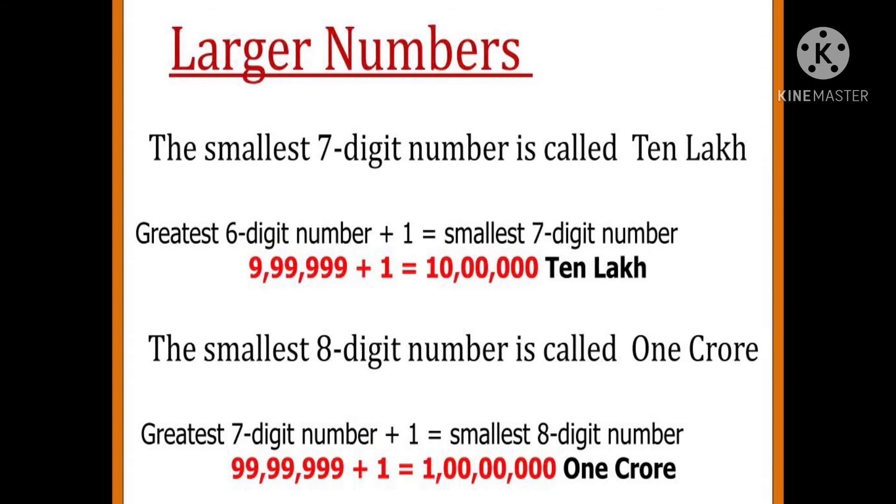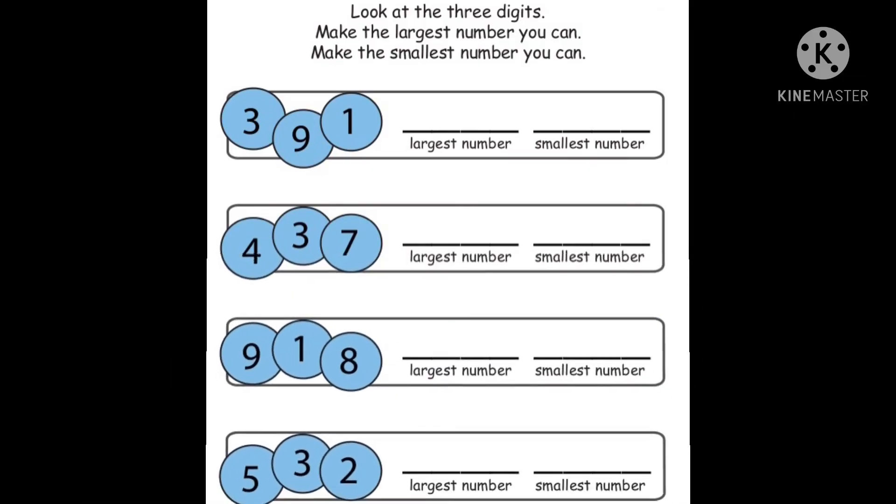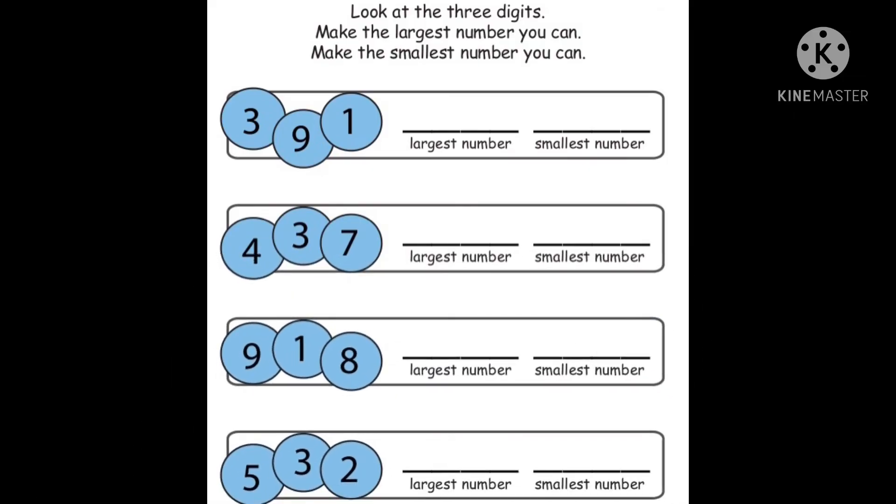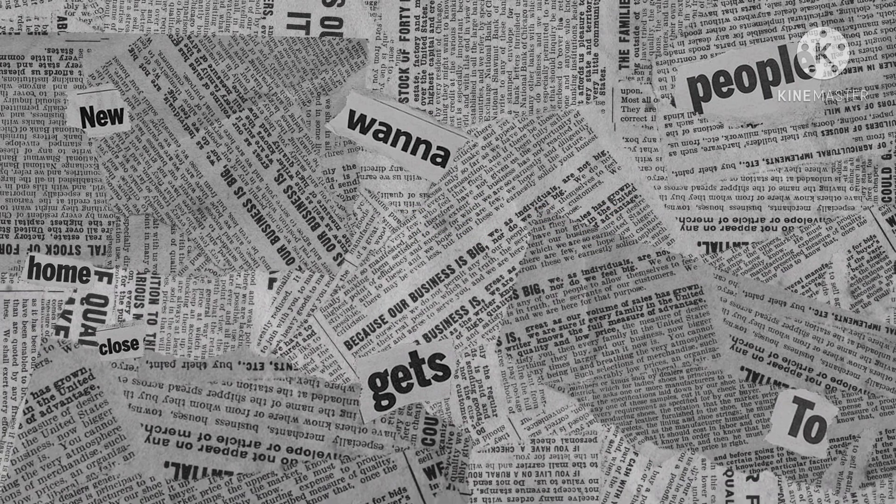Now look at these three digits: 3, 9, 1. So we are to make largest number which is equal to 931 and smallest number is 139. In the same way, by using 4, 3, 7, the largest number is 743 and the smallest number is 347. Now the rest of the numbers you are to make yourself.